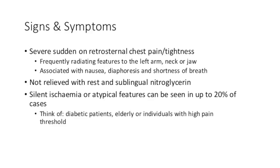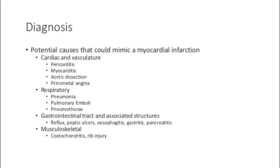From a differential diagnosis point of view, there are a number of potential causes that can mimic a myocardial infarction. Cardiac causes can include pericarditis, myocarditis, aortic dissection, and Prinzmetal angina. There can be respiratory causes such as pneumonia, pulmonary emboli, and pneumothorax, and more commonly gastrointestinal causes such as reflux, peptic ulcer disease, oesophagitis, and gastritis and pancreatitis.